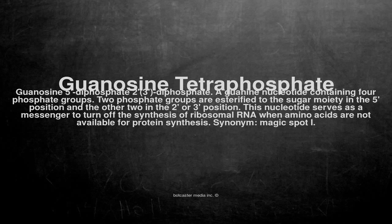Guanosine tetraphosphate: guanosine 5-diphosphate 2-3-diphosphate, a guanine nucleotide containing 4 phosphate groups. Two phosphate groups are esterified to the sugar moiety in the 5 position and the other 2 in the 2 or 3 position. This nucleotide serves as a messenger to turn off the synthesis of ribosomal RNA when amino acids are not available for protein synthesis.